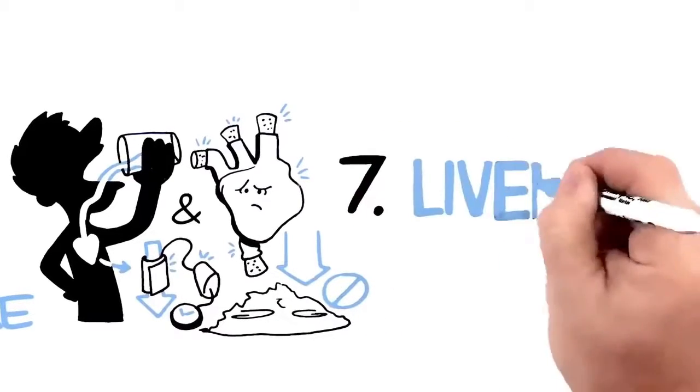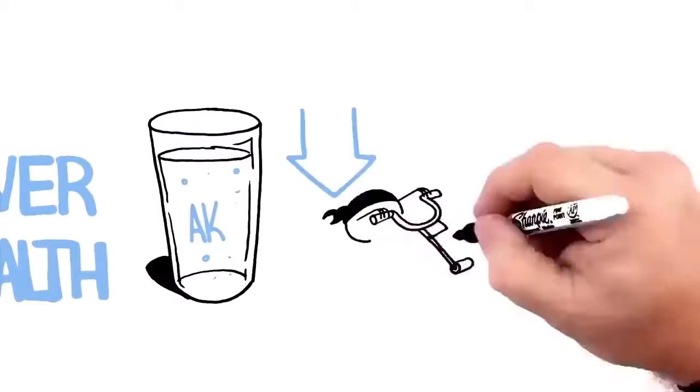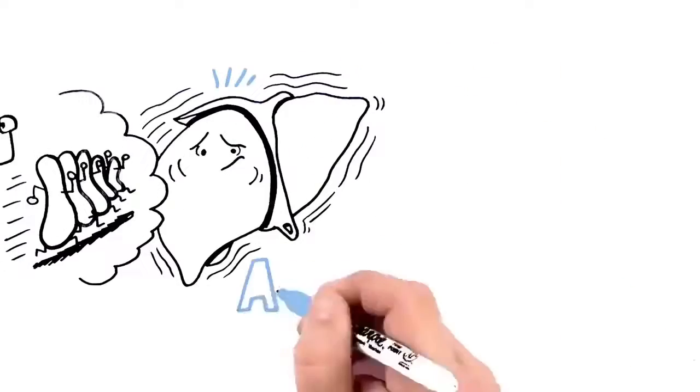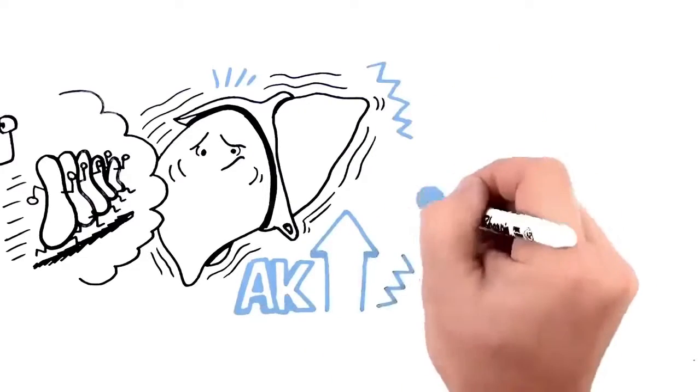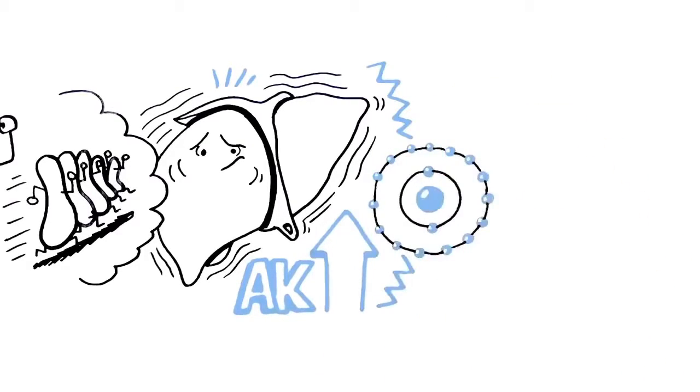7. Liver health. Alkaline water has been shown to reduce oxidative stress in the body that affects the liver. Alkaline water has also been shown to increase levels of a critical antioxidant that protects the liver.